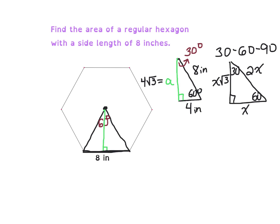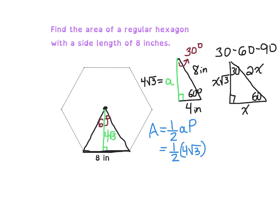So let's go back to our picture. We now know that the apothem is 4 times the square root of 3, so we have enough information to solve for the area. The area formula we're using is one-half times the apothem times the perimeter. Our apothem is 4 times the square root of 3, and we're multiplying that by the perimeter. Since it's a hexagon with 6 sides and a side length of 8, the perimeter is 48.